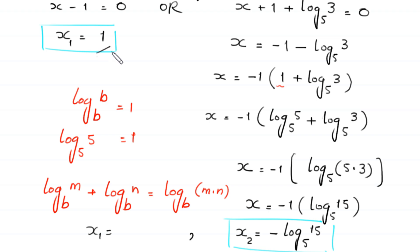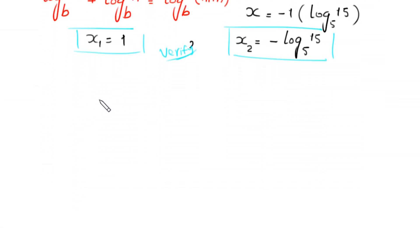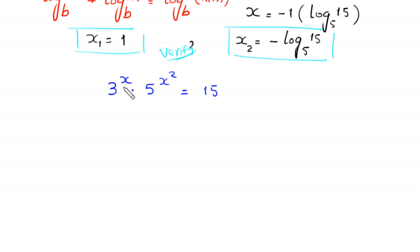So we have two solutions: x₁ equals 1 and x₂ equals negative log base 5 of 15. Let us verify these. For x₁ equals 1: 3 to the power 1 is 3, and 5 to the power 1 squared is 5 to the power 1, giving 3 times 5 equal to 15. This is obviously correct.